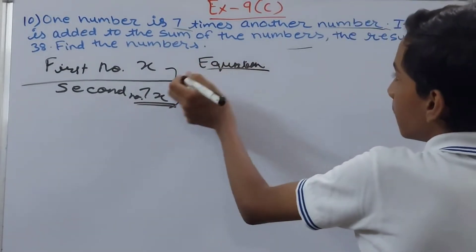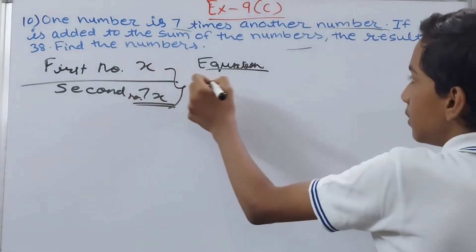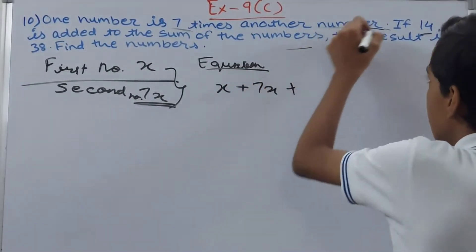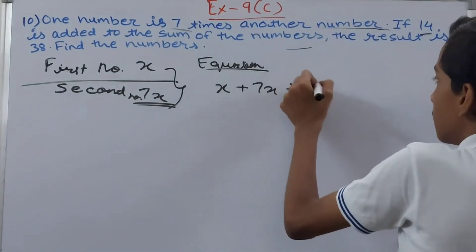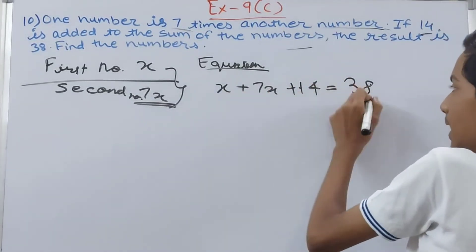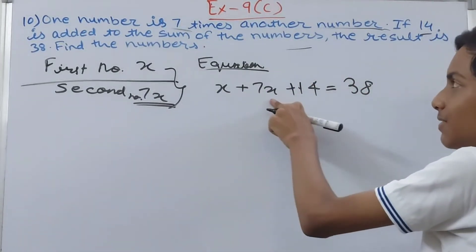The equation becomes: first of all we add these two, so x plus 7x, and then 14 here, that is equal to 38. When we add all of this, x plus 7x is sum of the numbers, and plus 14.